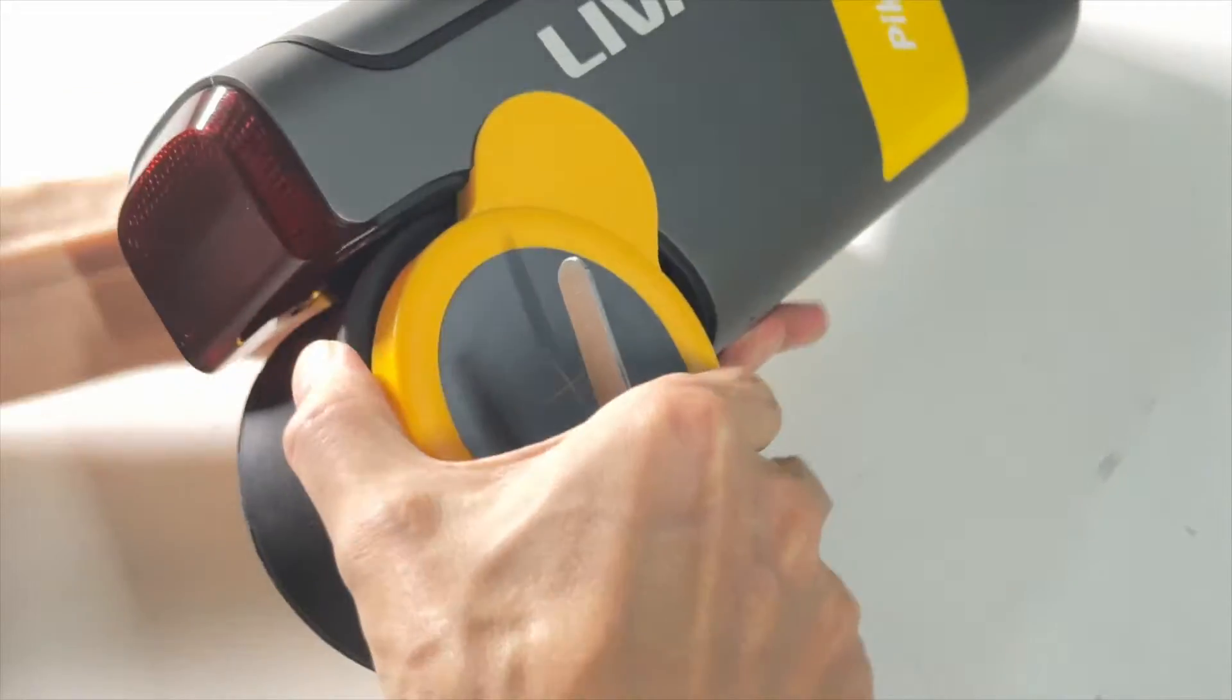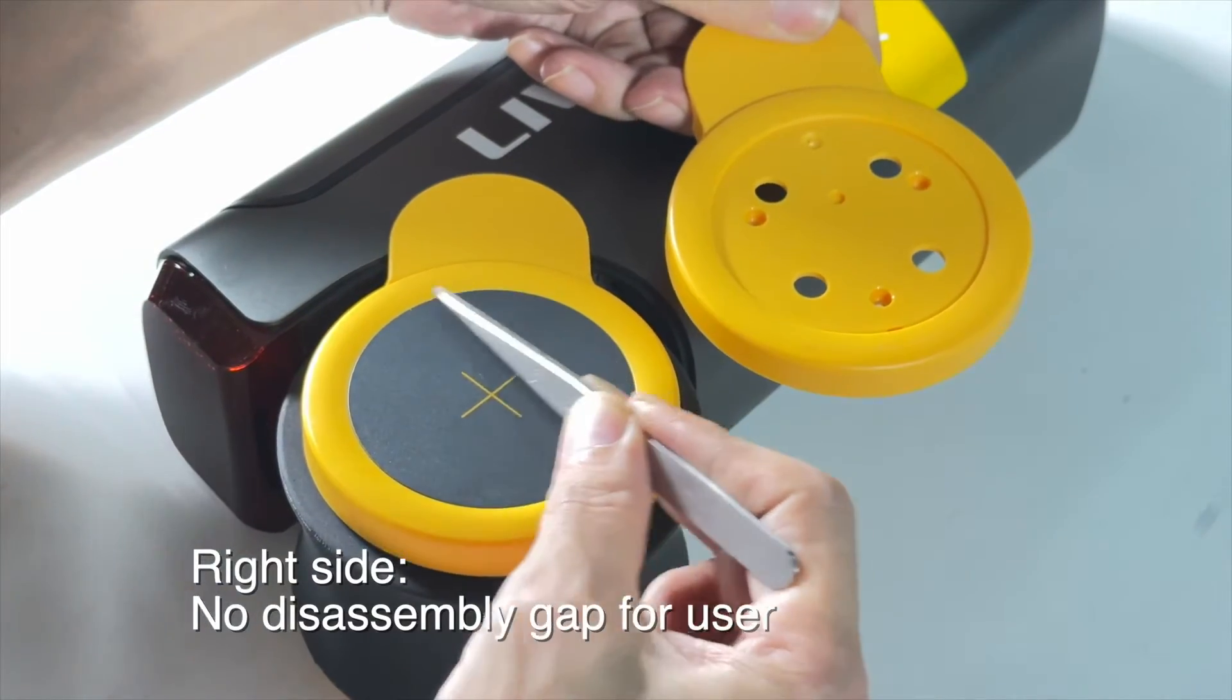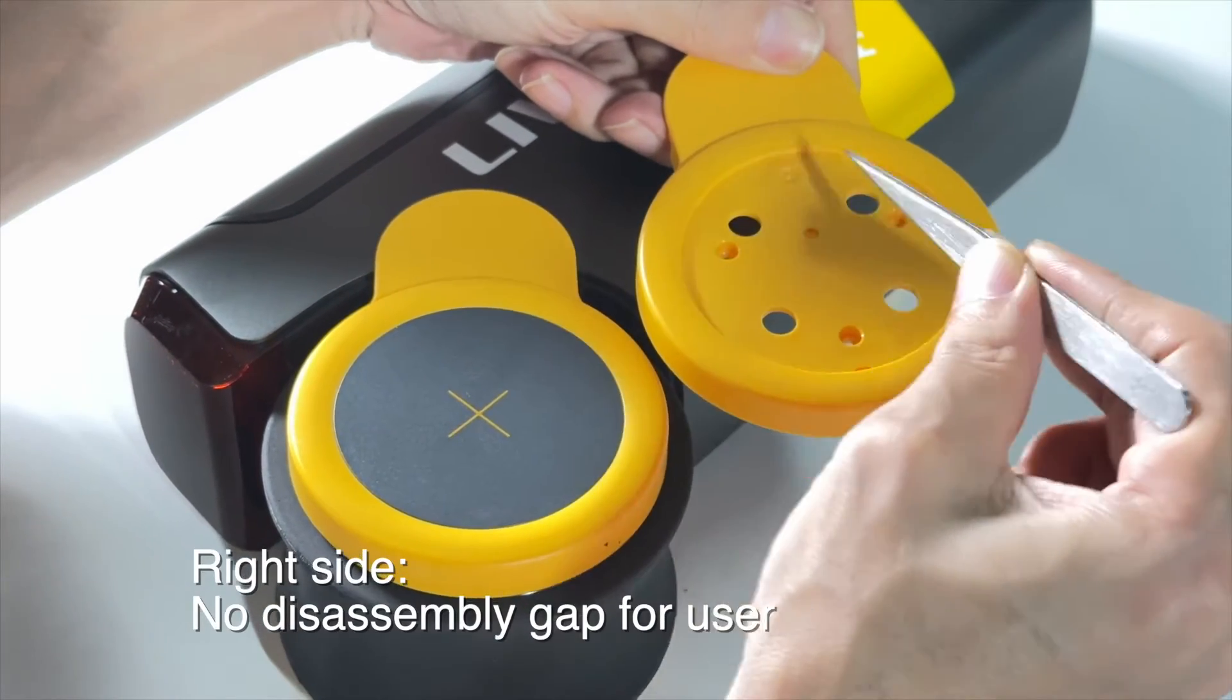But the right side of the tire doesn't leave this disassembly gap for the user. The cover here is completely sealed, sealing the four screw holes below for sealing purpose, not just for aesthetics.